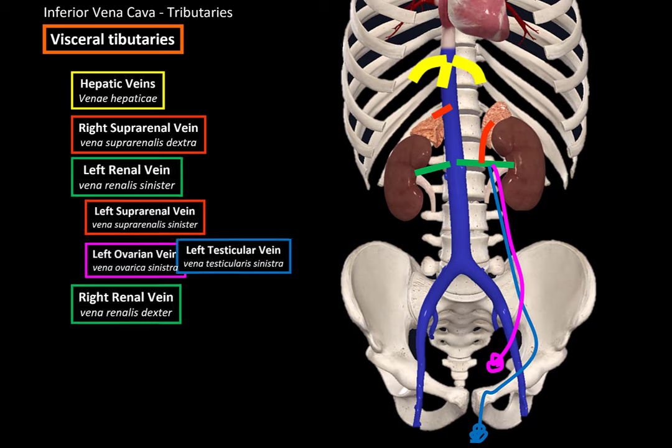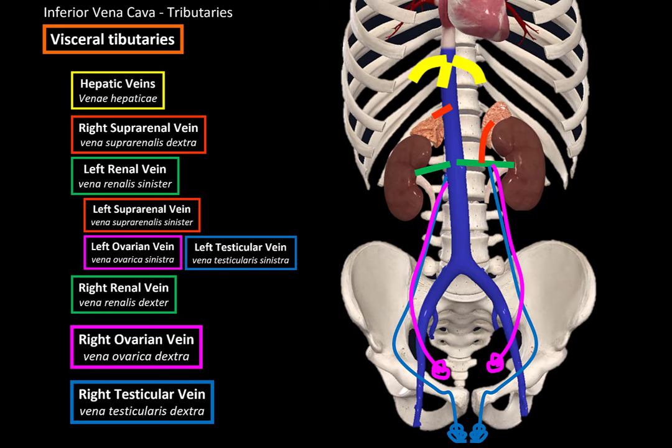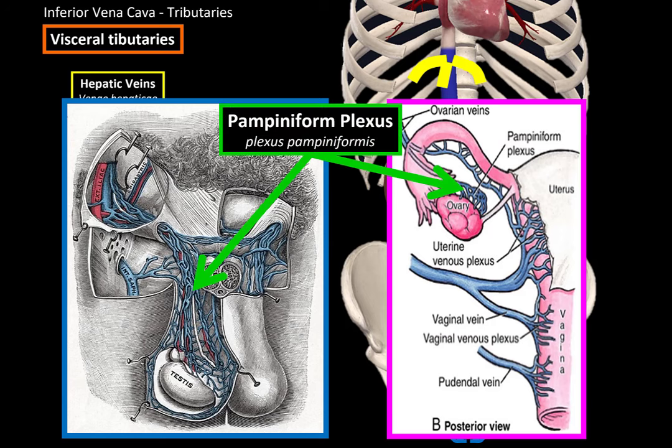On the right side, however, the right ovarian vein and the right testicular vein drain their respective areas directly into the inferior vena cava. Importantly, both the ovarian and testicular veins drain a plexus called the pampiniform plexus, which lies on the posterior aspect of the ovaries and the testis.